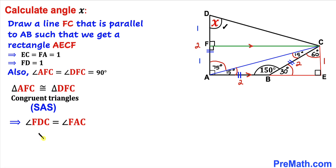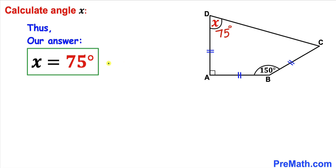We know angle FDC is x, and since these angles are congruent, x equals angle FAC, which equals 75 degrees. So angle x turns out to be 75 degrees. Thanks for watching — please don't forget to subscribe to my channel for more exciting videos!